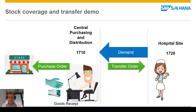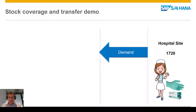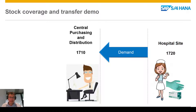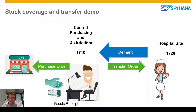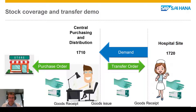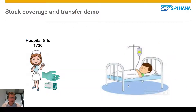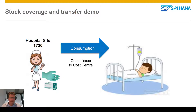First, we're going to run MRP in the hospital site to show the demand in terms of purchase requisitions. Then we'll show MRP running from plant 1710, generating the purchase order out to the vendor and a transfer order to move stock across. Then we'll do the goods receipt of stock from the purchase order from the vendor, the goods issue of that, and the goods receipt coming to the hospital site itself. In between, I'll show that stock being in transit.